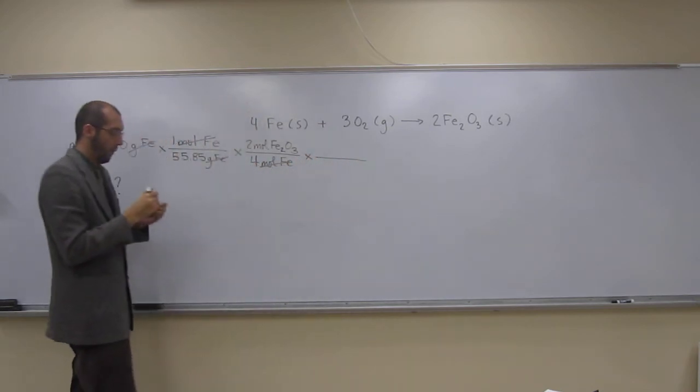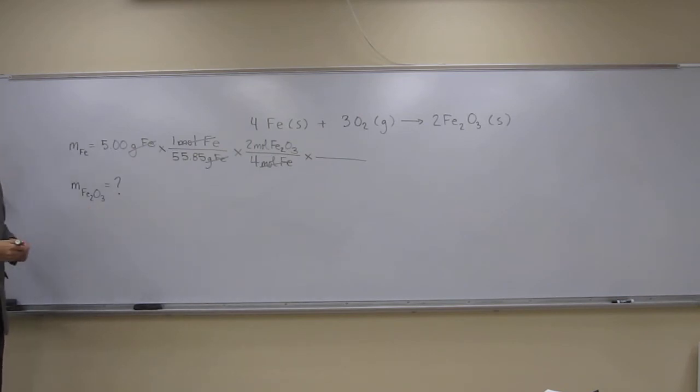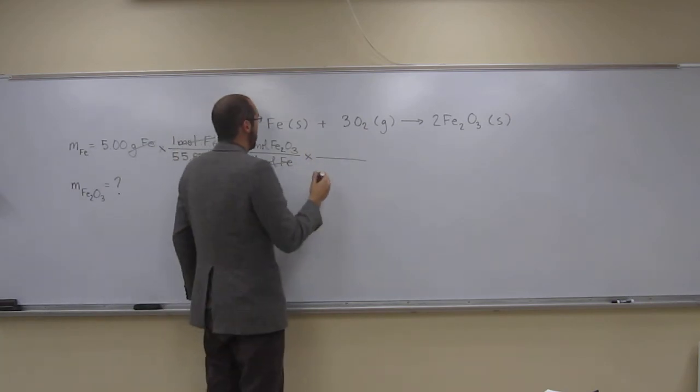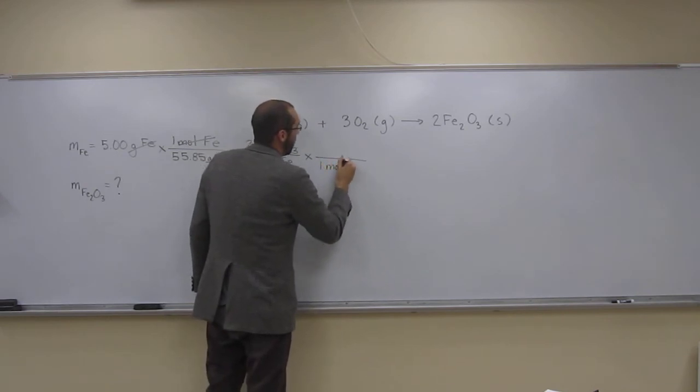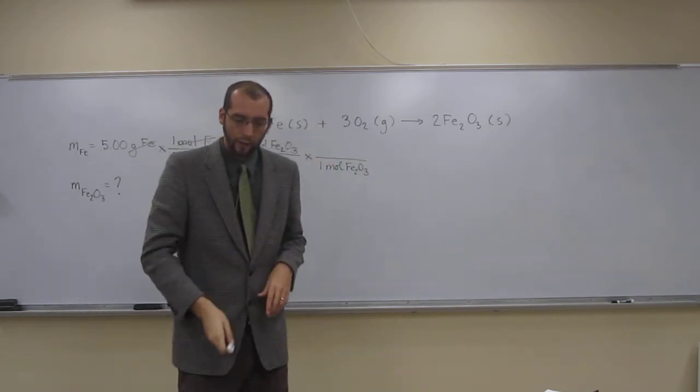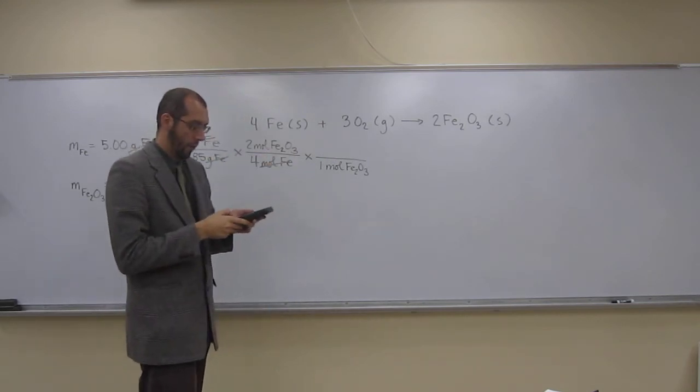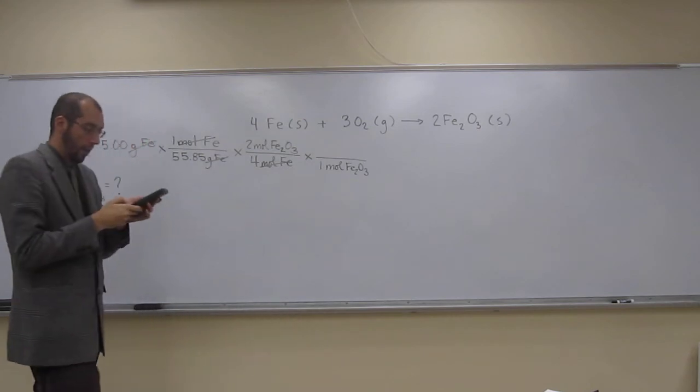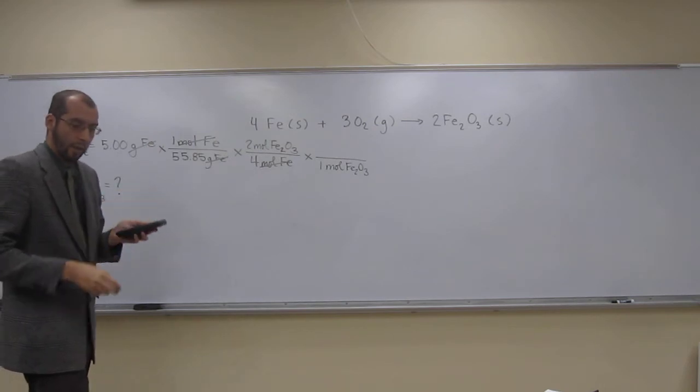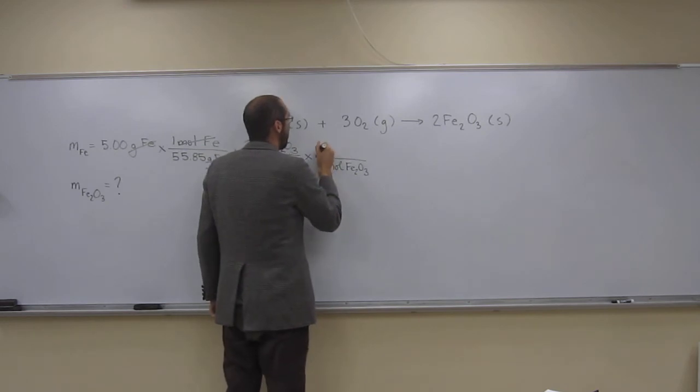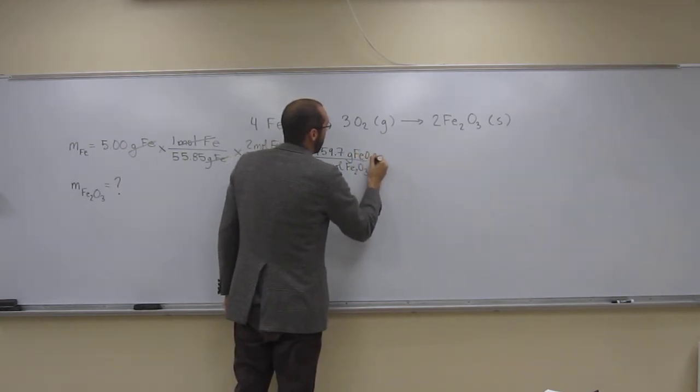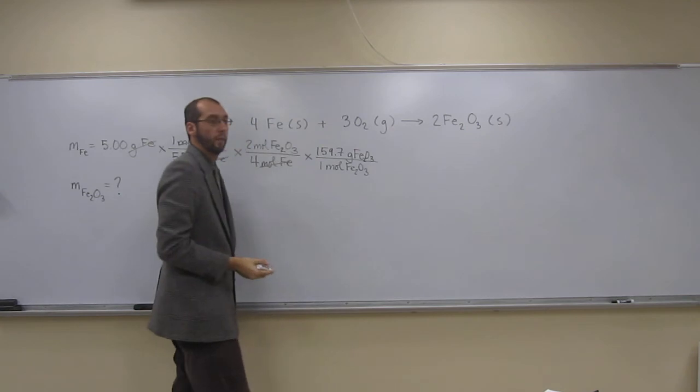So we're now at moles of iron three oxide, but we want mass of iron three oxide. So we're going to have to use the molar mass of iron three oxide. So for every one mole of iron three oxide, what's the mass? Well, we're going to have to figure it out. So there's two iron atoms. So 55.85 times 2 plus 16 times 3, so we get 159.7 grams of iron three oxide for every mole.